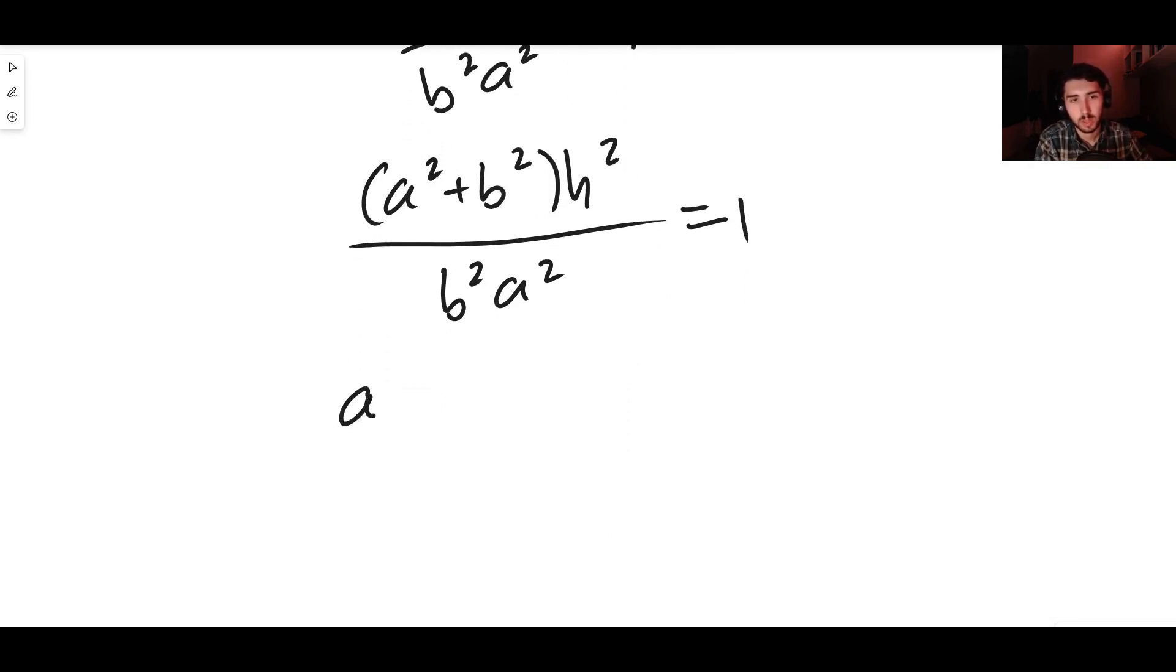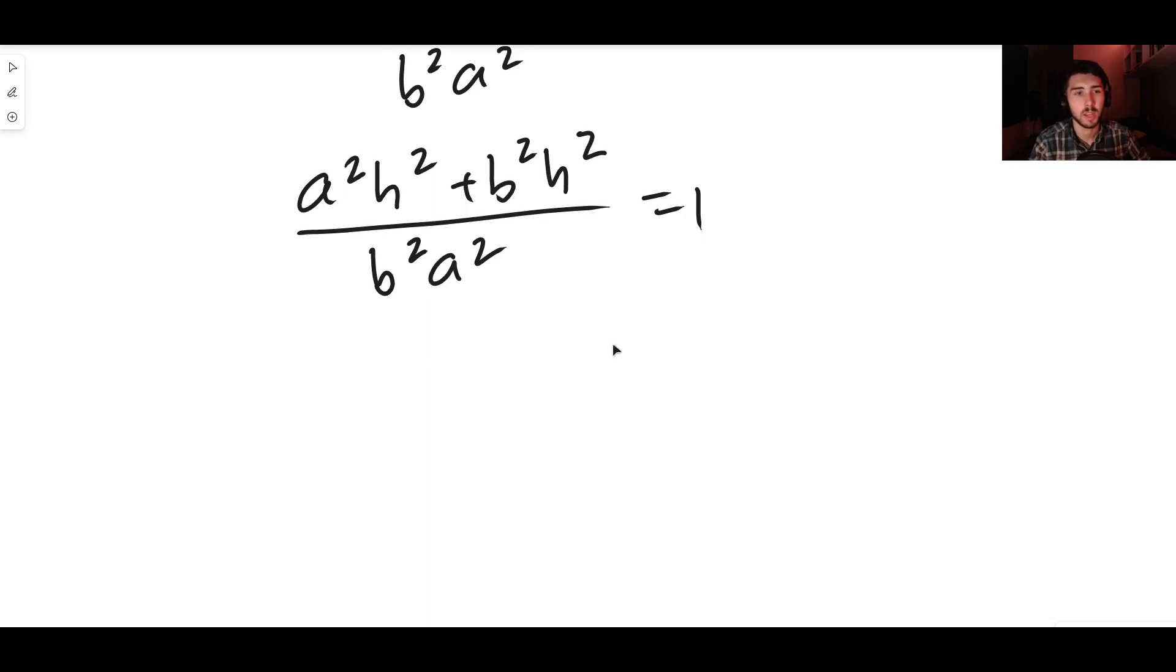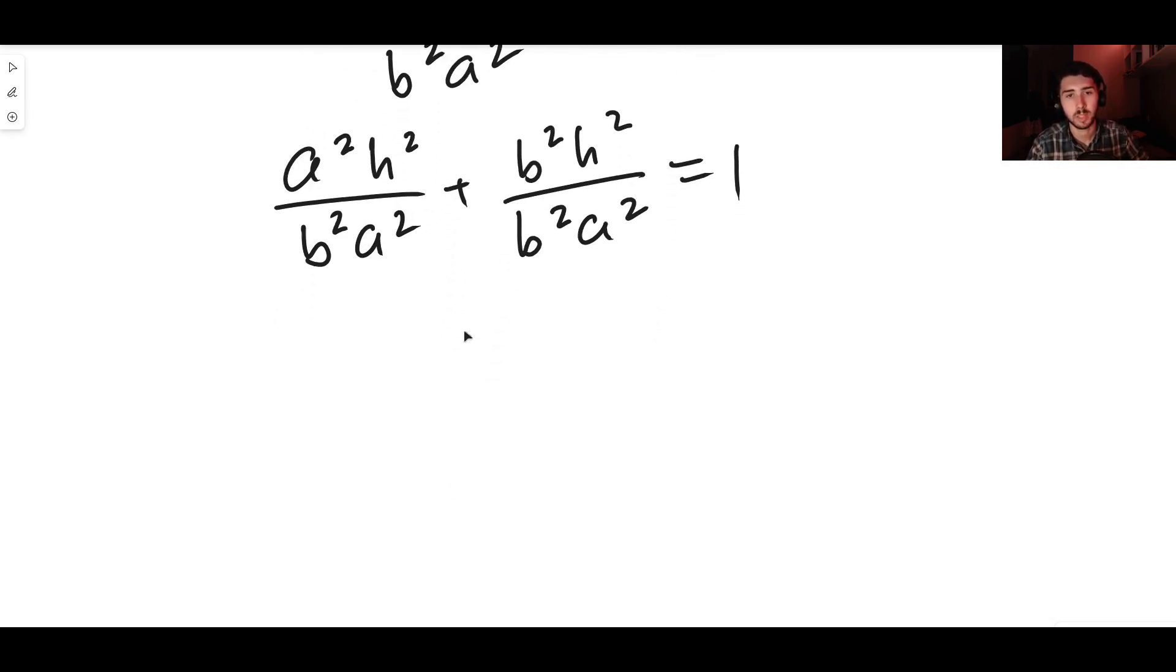We can expand out the brackets there. We end up with a squared h squared plus b squared h squared divided by b squared a squared equals one. We're almost there. We end up then with two fractions: a squared times h squared divided by b squared a squared, plus b squared h squared divided by b squared a squared, equals one.